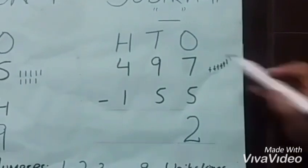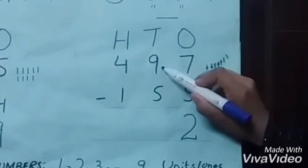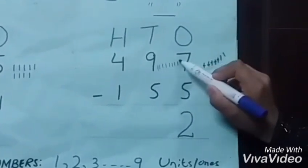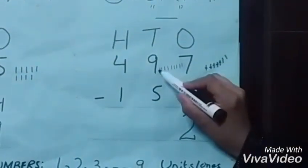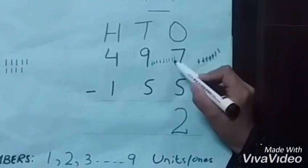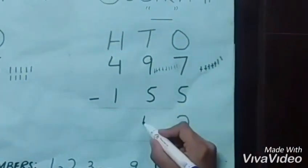Subtracting five ones from seven ones, we get two ones. Now we have nine tens. Subtracting five tens from nine tens, we are left with only four tens.